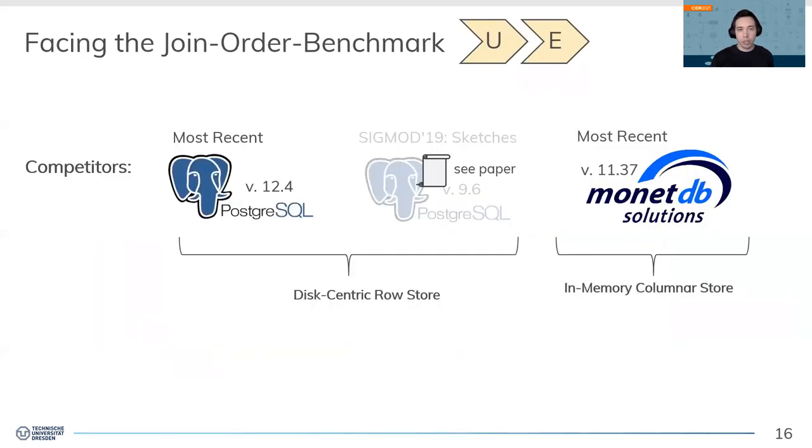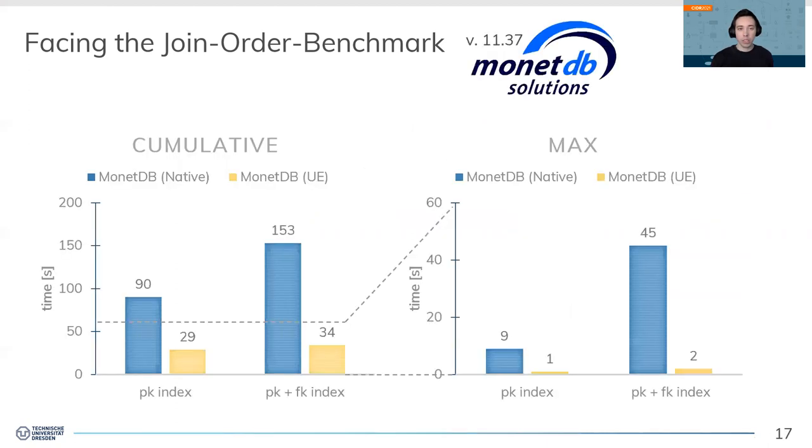To show that our approach really works well in practice, we use the well-known Join Order Benchmark, which consists of 113 select-project-join queries with up to 16 joins over real-world data. As competitors, we use Postgres as an example for a disk-centric row store and MonetDB as an example for an in-memory columnar store. Both systems are open source, so you're free to download our evaluation basis to further analyze and reproduce the reported results.